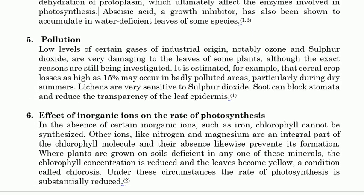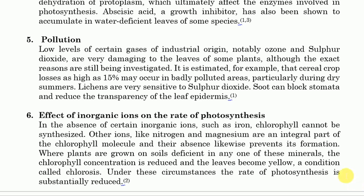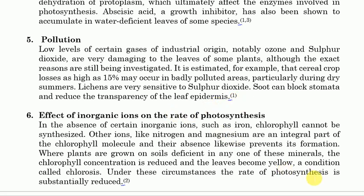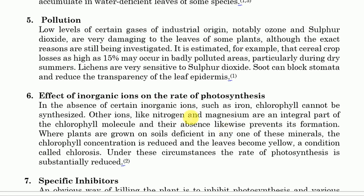The fifth factor is pollution. Low levels of gases such as sulfur dioxide and other gases have been shown to inhibit the process of photosynthesis. Pollutants affect photosynthesis in various ways — for example, soot can block stomata and reduce the transparency of leaf surfaces. We also have the effect of inorganic ions: in the absence of certain inorganic ions such as iron, chlorophyll cannot be synthesized.